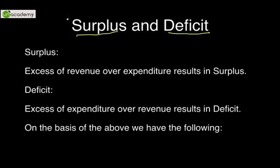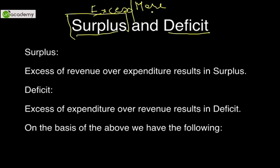What do we literally mean by surplus? Something which is in excess, something which is more. Whereas what is deficit? Something which is less — it is not as much as it is required. So from a fiscal policy point of view, we have two types of concepts as we discussed in the earlier part: revenue and expenditure.